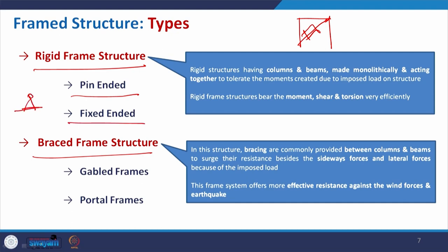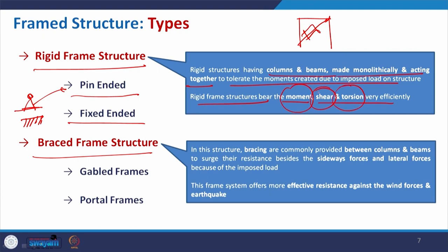In the rigid frame joint, the joint may be a pin joint or a fixed-end joint. The representation of each was discussed when we covered different supports of a structural system. In a rigid structure, columns and beams are made monolithically — as if it is a single structure — acting together to tolerate the moments created due to imposed load on the structure. Rigid frame structure bears moment, shear and tension very effectively. There are three different forces acting: the moment — when there is a pressure creating a couple — it may be clockwise or anticlockwise, then the shear.